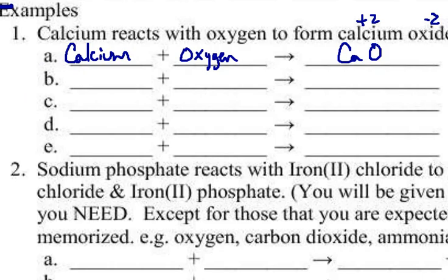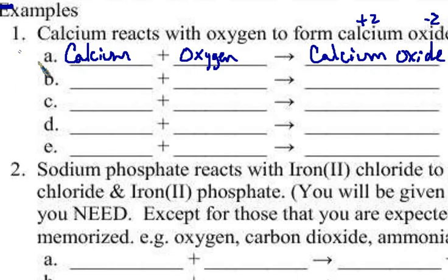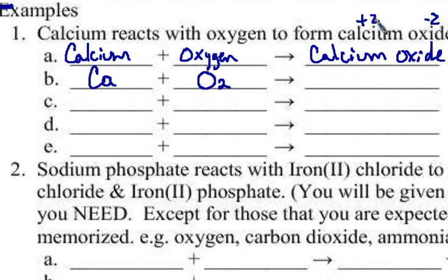Now we start writing the formulas. Calcium is a metal by itself, so it's just Ca. Oxygen, however, is one of our diatomic molecules, so it is O2. When they combine, they're going to make calcium oxide. Calcium has a plus two charge — it's an alkaline earth metal. Oxide is the ion for oxygen; it has a minus two charge because it's in group six and needs to gain two electrons to look like the noble gas. So when these form, this is going to be CaO. You may notice we don't have the same number of atoms on both sides of the arrow, so this is what we balance for.